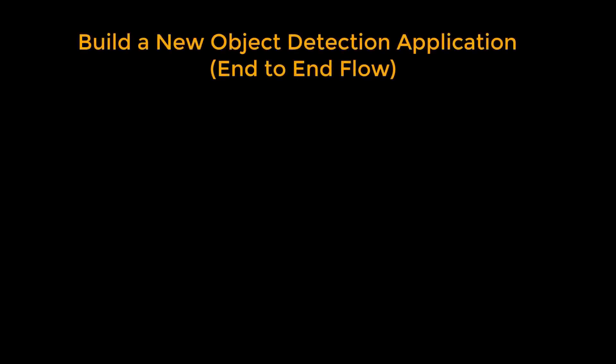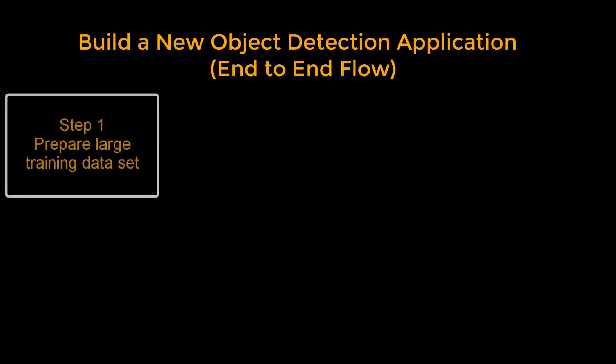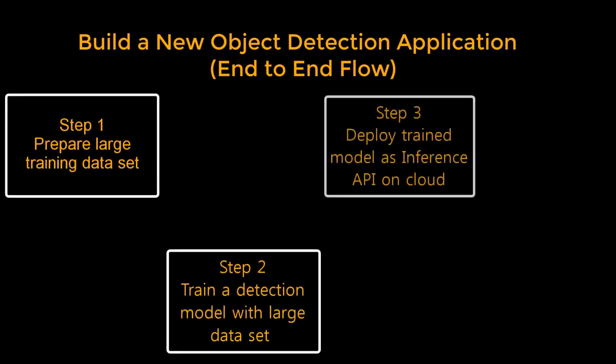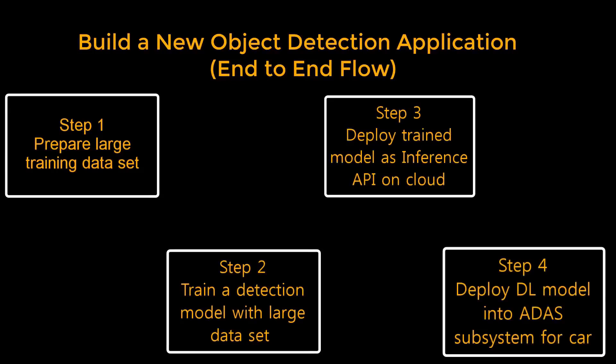The overall development includes four steps. The first step is to prepare a large data set. The second step is to train a detection model with that large data set. The third step is to deploy the trained model into a data center for simulation testing. The fourth step is to deploy the deep learning model into the embedded system in a car.